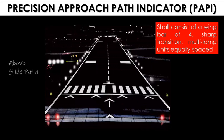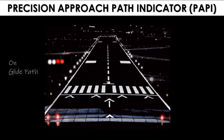This is PAPI — Precision Approach Path Indicator. PAPI shall consist of a wing bar of 4 sharp transition multi-lamp units equally spaced, with 9m spacing between lamps and the innermost lamp placed 15m from the runway edge. If above the correct approach slope, the pilot will see the light closest to the runway as red and the other 3 as white. If further above, all 4 lights appear white. On the correct approach slope, the 2 lights closest to the runway are red and the farthest 2 are white. If below the correct slope, 3 lights closest to the runway are red and the farthest is white. If well below, all 4 lights appear red.